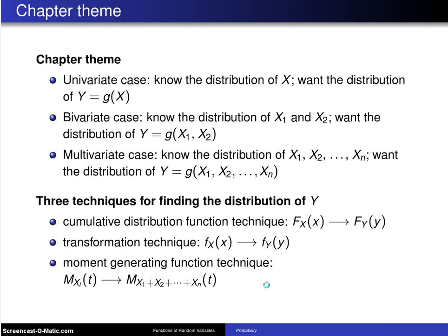Here is the chapter theme. In the univariate case, we know the distribution of some random variable X and we want the distribution of Y = g(X). In the bivariate case, we know the joint distribution of X1 and X2. We want the distribution of Y equal to some function g(X1, X2).